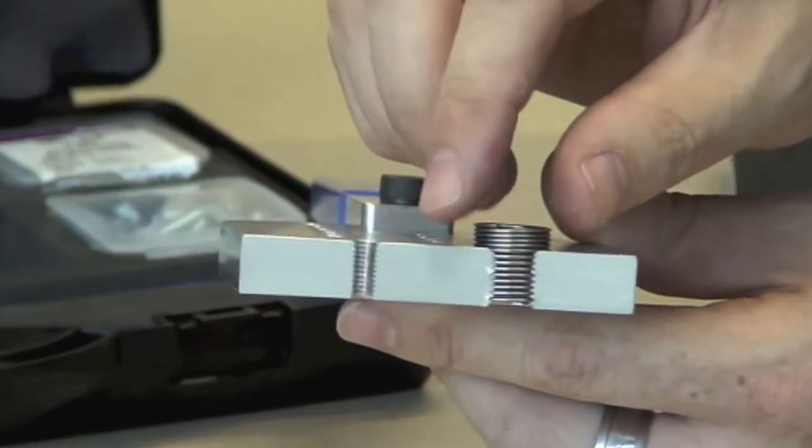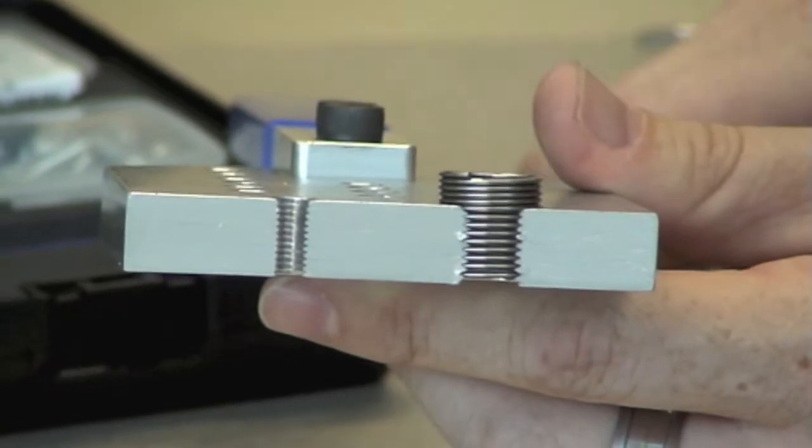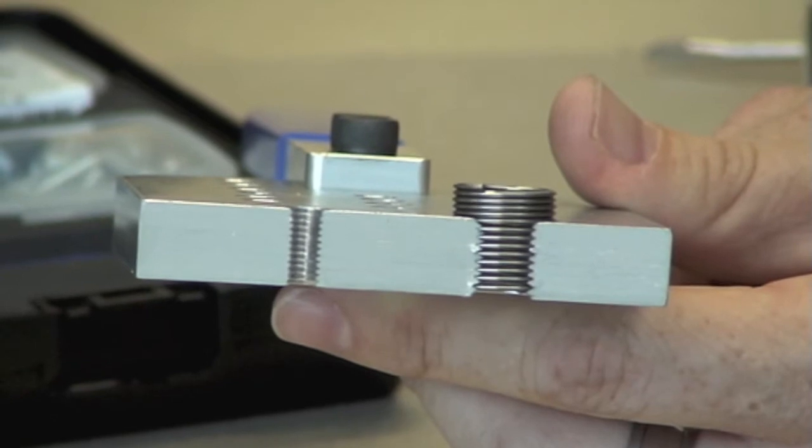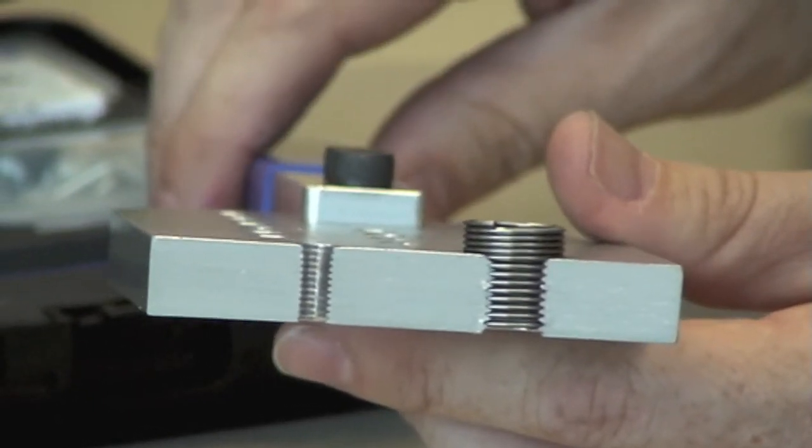Now the insert is actually bigger than the tapped hole. So when the insert goes in there it actually compresses against the wall of the parent material and therefore locks it in place. Essentially that is how a wire thread insert works and how it retains its position.